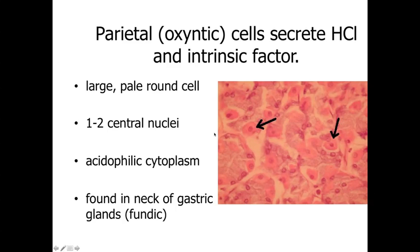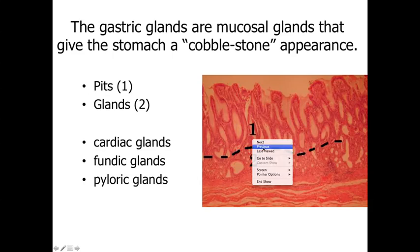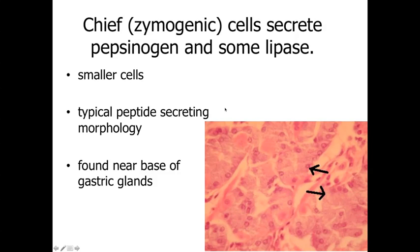The parietal or oxyntic cells are involved with secreting hydrochloric acid and intrinsic factor. They are large, pale, round cells with one or two centrally placed nuclei and acidophilic cytoplasm, found predominantly in the neck of the gastric glands. Deeper within the gastric glands are the chief or zymogenic cells, which secrete pepsinogen and some lipase. They show basal basophilia with the nucleus towards the bottom third of the cell, lots of rough endoplasmic reticulum in the middle third, and cytoplasmic granules at the top where digestive enzymes are stored prior to release.